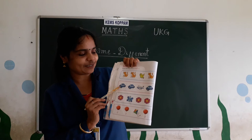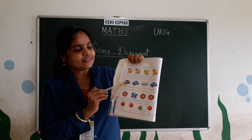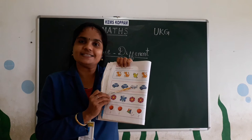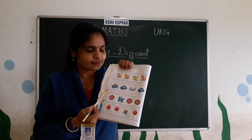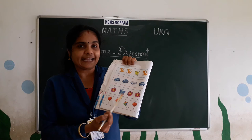Then, next picture. Okay. Listen. What are these? Yes, these are vehicles. Some cars are there. Okay. But one is an aeroplane. Okay. One is an aeroplane. So, this aeroplane is different. Cars are same. Cars are same; aeroplane is different. Different. Same. Okay.